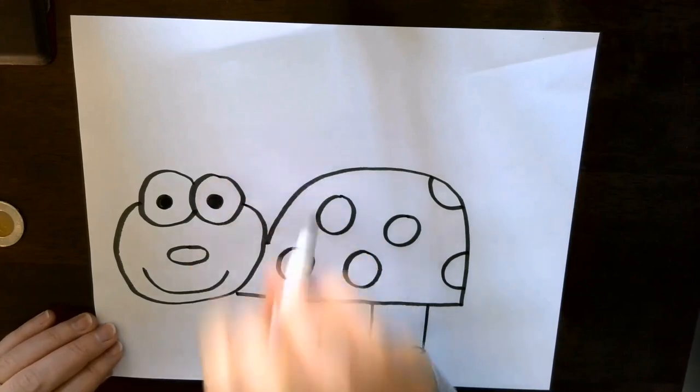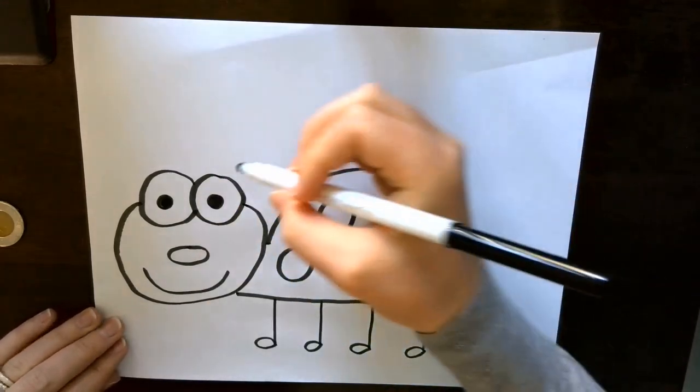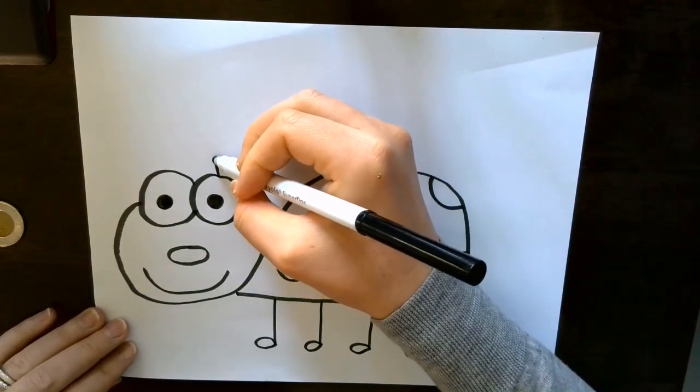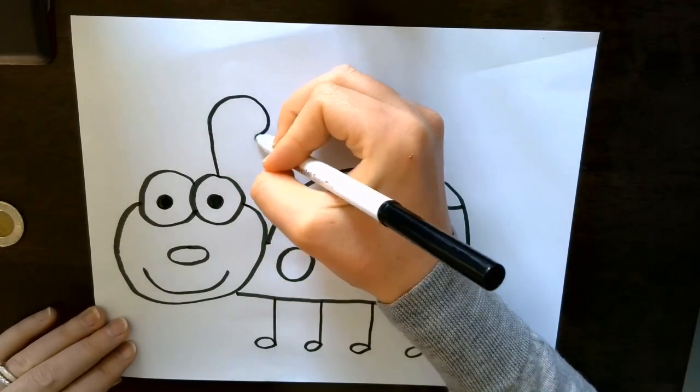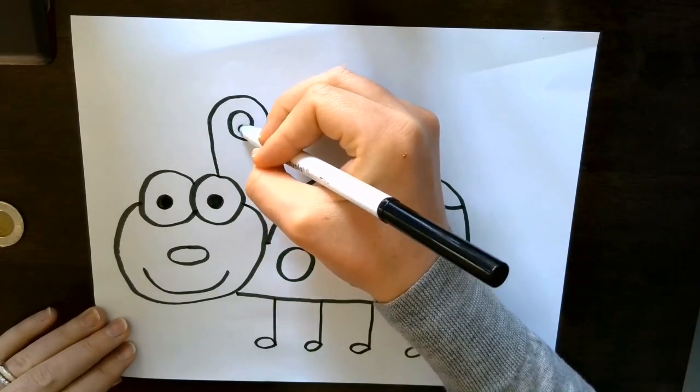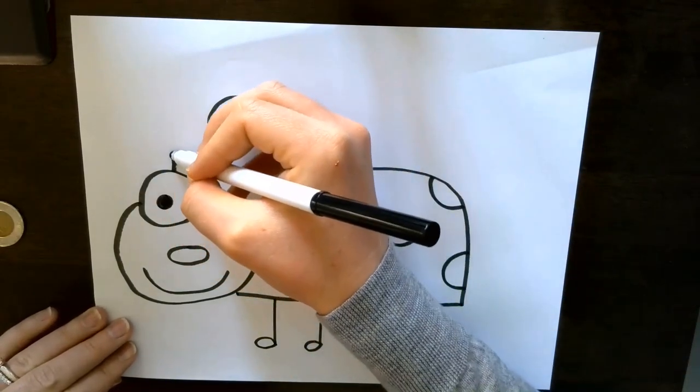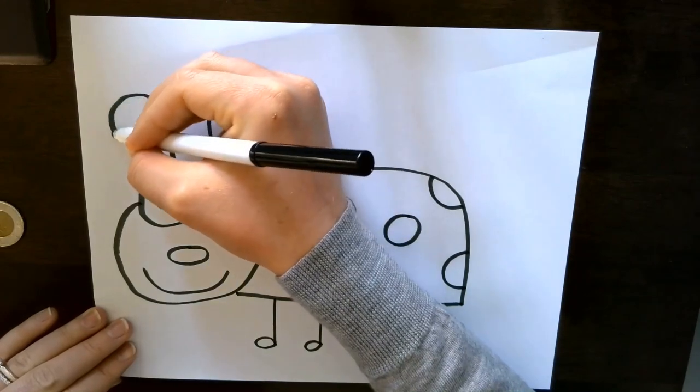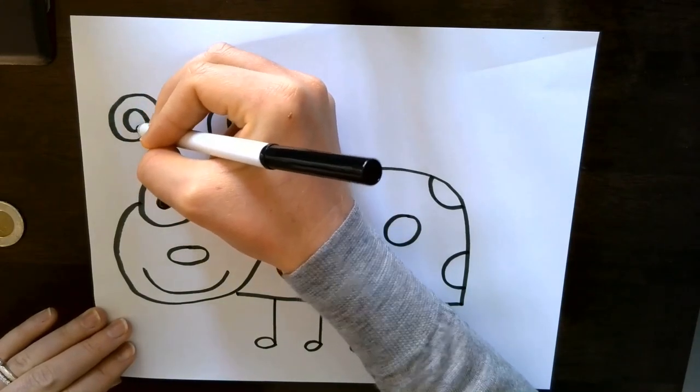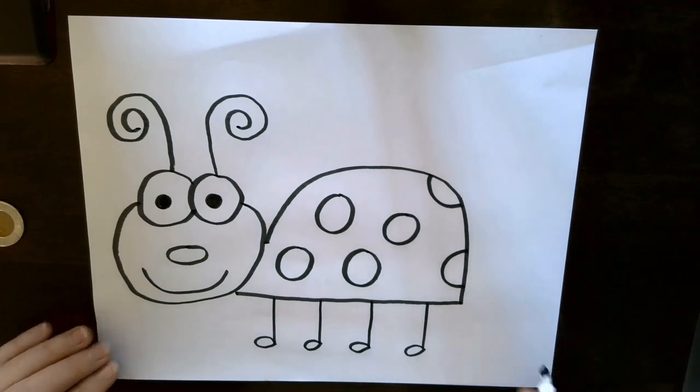Next he needs some antennas so I'm going to start at the top of the eyeballs, do a straight line up and then a little swirly curl. You can make yours look like mine if you like or you can do a different kind.